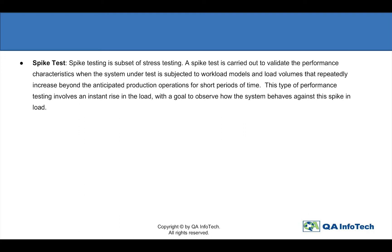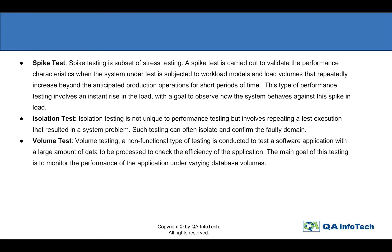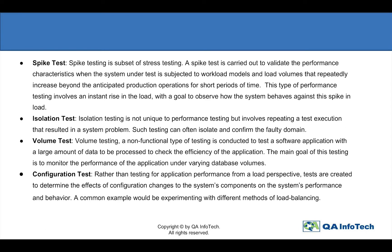Spike testing is a subset of stress testing wherein the aim is to determine the behavior of the system under test when the load increases or spikes beyond the anticipated number of users. The isolation test is done by repeating a test to confirm the faulty domain. Volume testing is conducted to check and monitor performance under various database volumes. Configuration testing determines the effects of configuration changes of components based on the system's performance and behavior.